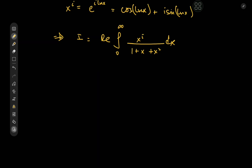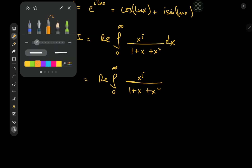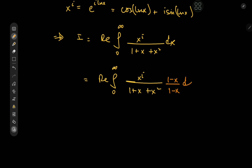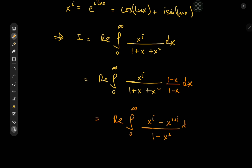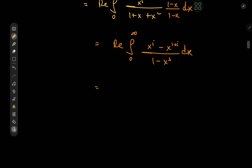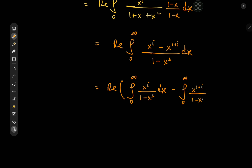That does look somewhat better, but we still need something more to work with. We could get a nice structure if we expand upstairs and downstairs by 1 minus x. So we have the integrand along with 1 minus x divided by 1 minus x, dx. That gives us the real part of the integral from 0 to infinity of x^i divided by 1 minus x cubed, dx. Using linearity of integration, we write this as the real part of the integral from 0 to infinity of x^i divided by 1 minus x cubed, dx, minus the integral from 0 to infinity of x^(1+i) divided by 1 minus x cubed, dx.